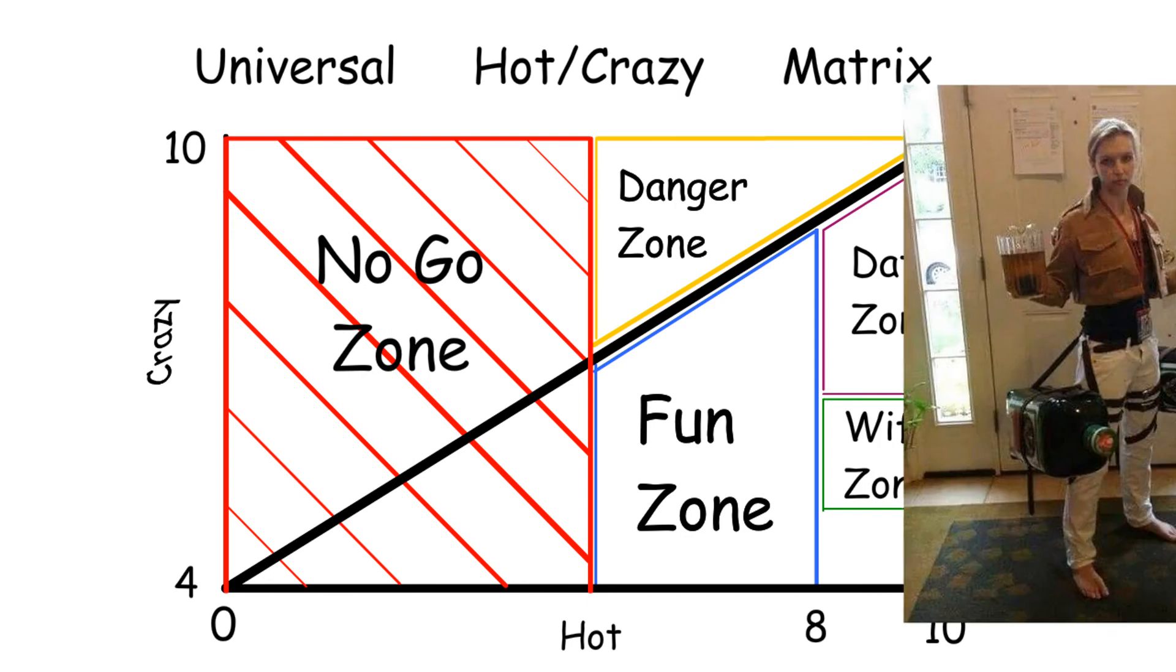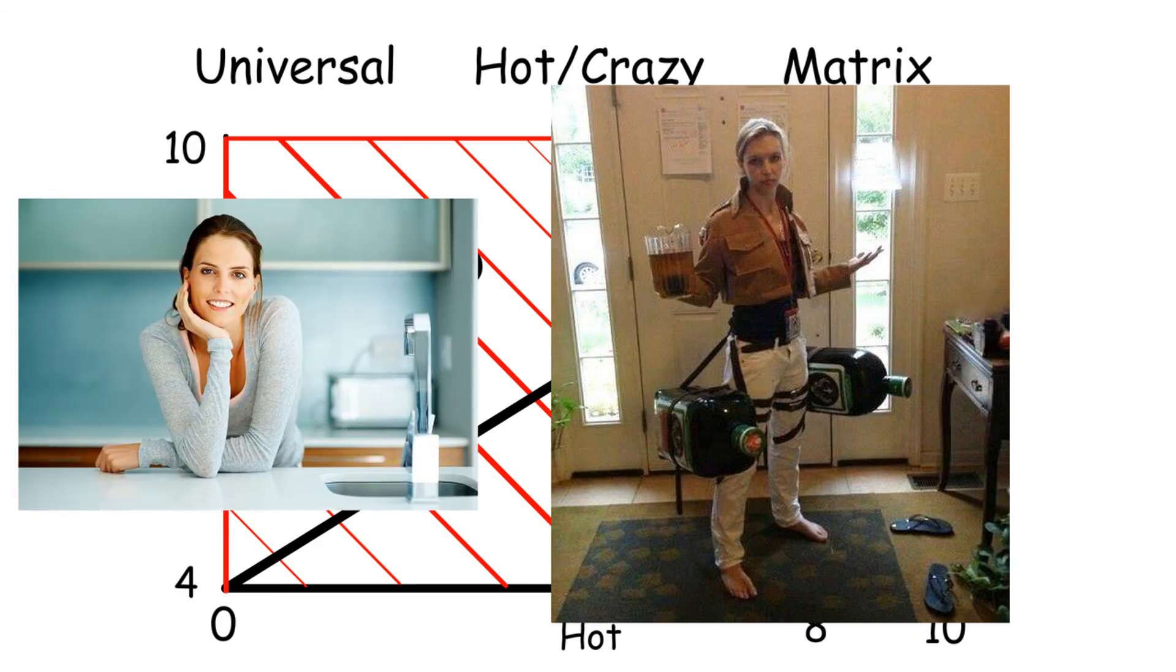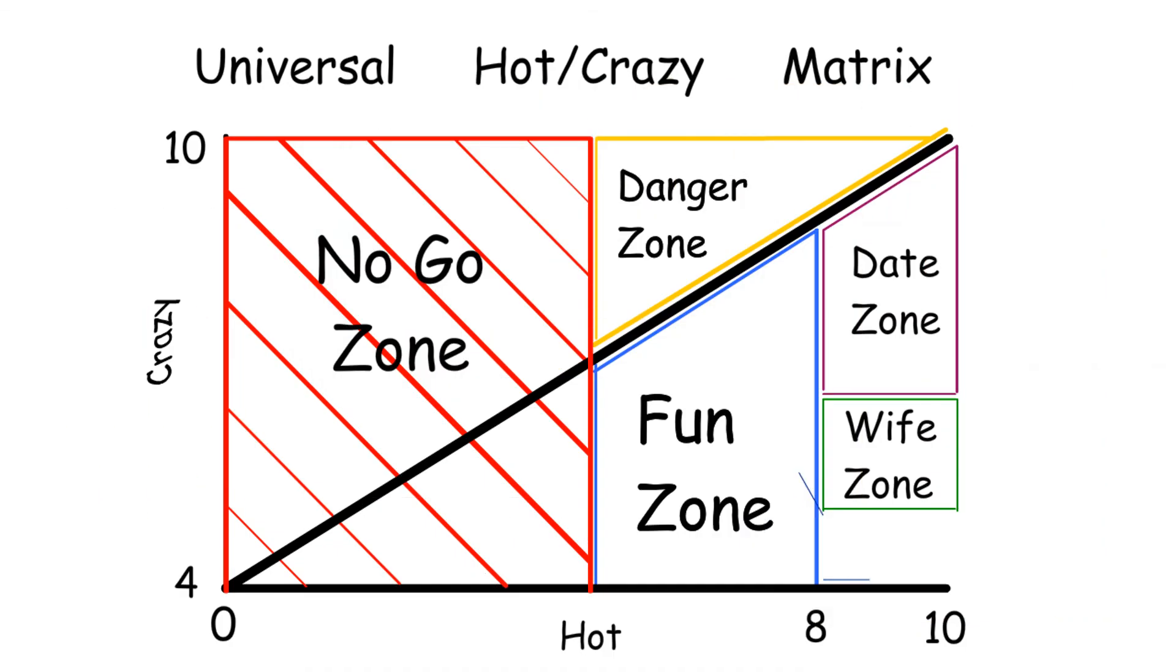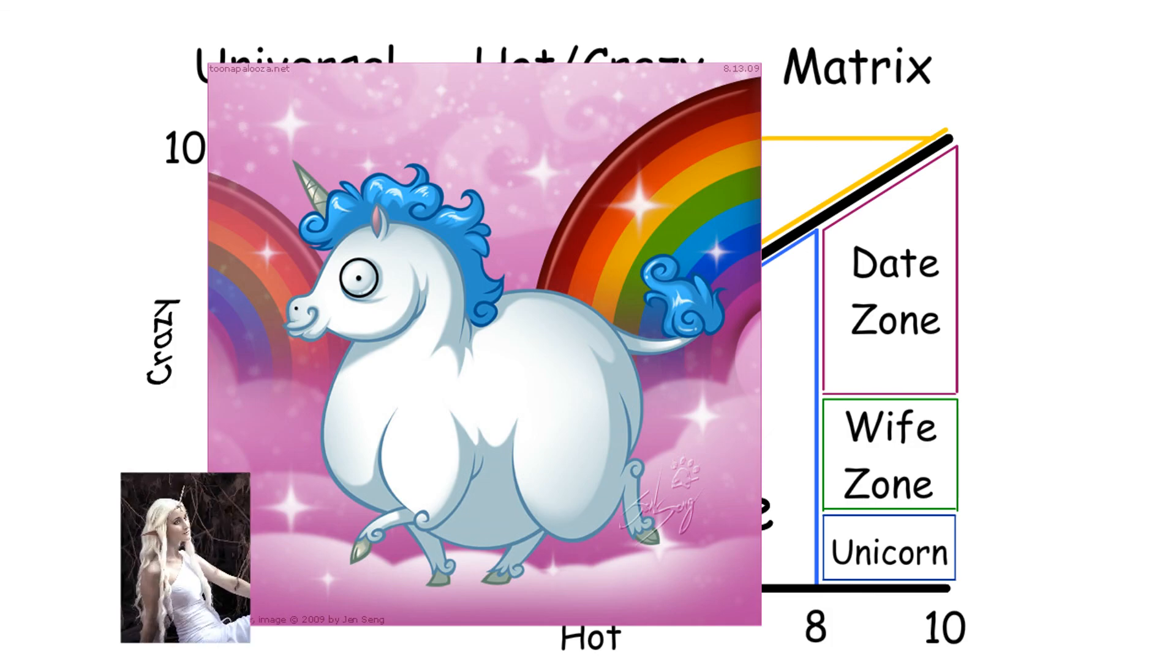When you meet this girl, you should consider a long-term relationship. Below a 5 crazy and above an 8 hot, this is your unicorn zone. These things don't exist.